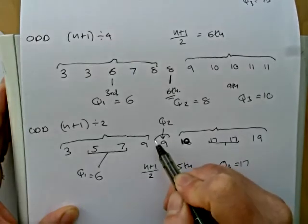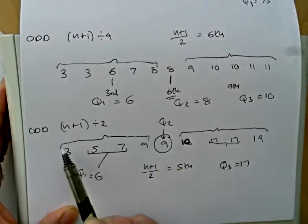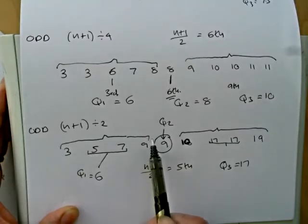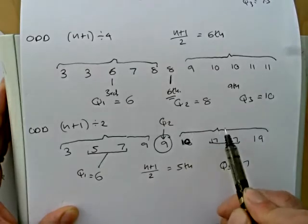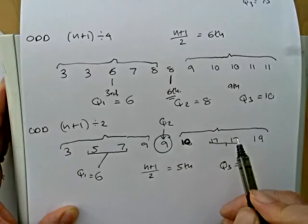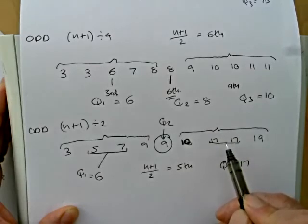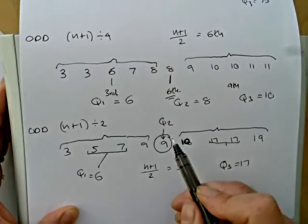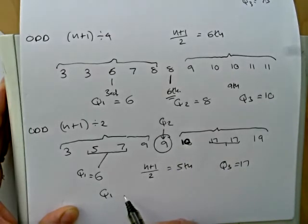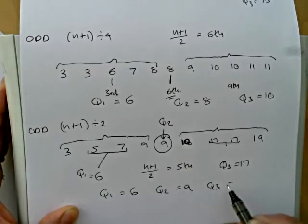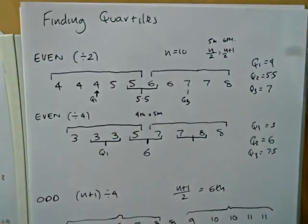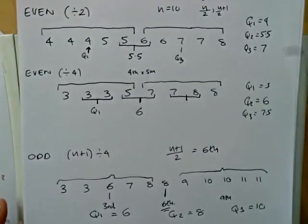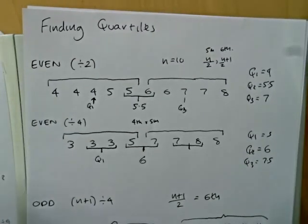So just to recap, 9 was our median. We had an even number of numbers before it, so we find the median of those even numbers, which was 5 plus 7 divided by 2 is 6. And there's an even number of numbers above our median. We find the median of that upper four, and that's 17. So Q1 is 6, Q2 is 9, and Q3 is 17. And that covers all the possibilities that you can get in lists of numbers where you're required to find quartiles. I hope that's helped.